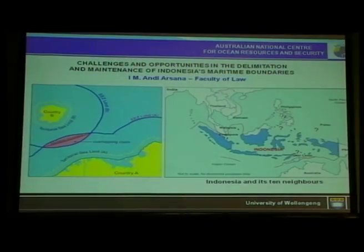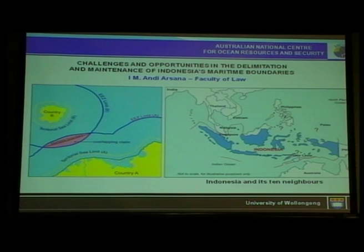According to the United Nations Convention on the Law of the Sea, every country can claim maritime area around its land territory. That picture illustrates several maritime zones that a country can claim. Some of you might still remember from high school that a country can claim up to 200 or even 350 nautical miles from baseline.